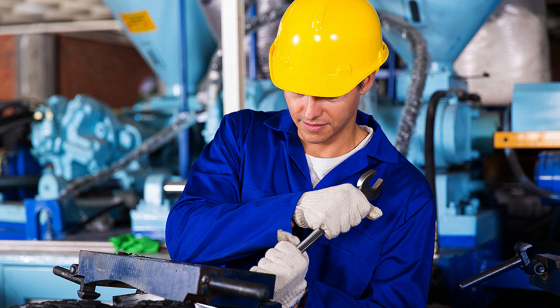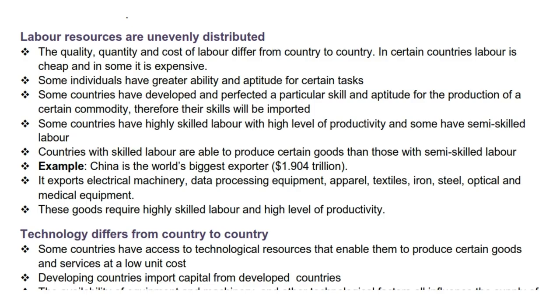The next supply reason is that labor resources are unevenly distributed. The quality, quantity, and cost of labor differ from country to country. In certain countries labor is cheap and in some it is expensive. Some individuals have greater ability and aptitude for certain tasks. Some countries have developed and perfected a particular skill and aptitude for the production of a certain commodity, therefore their skills will be imported. Some countries have highly skilled labor with a high level of productivity and some have semi-skilled labor. Countries with skilled labor are able to produce certain goods better than those with semi-skilled labor.